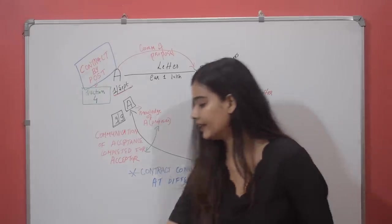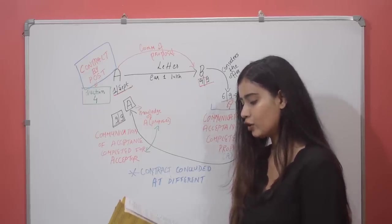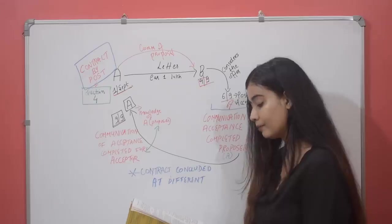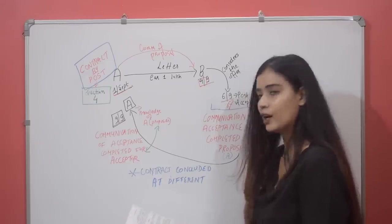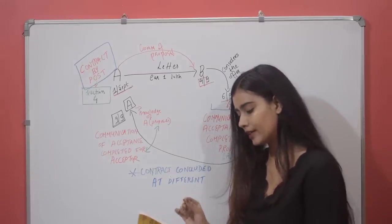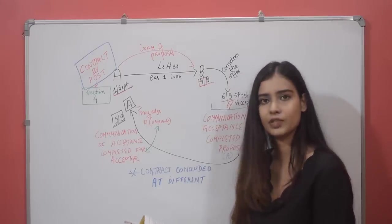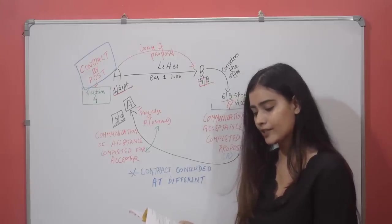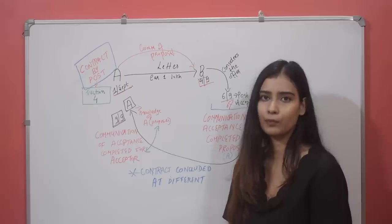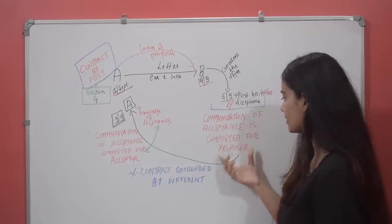I hope you understood this. If you read the second paragraph, first line of Section 4: 'The communication of an acceptance is complete as against the proposer when it is put in course of transmission to him so as to be out of the power of the acceptor.' This line simply means: when the letter of acceptance is posted — 'put in course of transmission to him' means to the proposer via post — and once posted, it is out of the power of the acceptor. So as soon as B posts the letter of acceptance, the communication of acceptance is completed for the proposer.